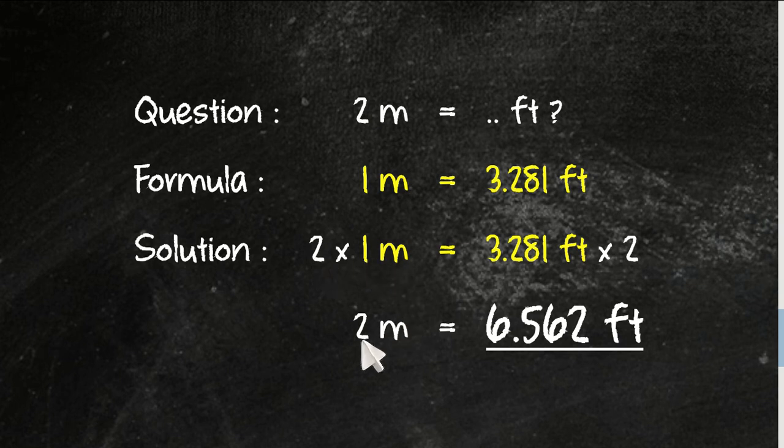2 times 1 equals 2 meters. This is exactly like the question: 2 meters. And then 3.281 feet times 2 equals 6.562 feet. And that's it. That's the answer.